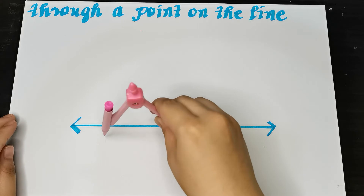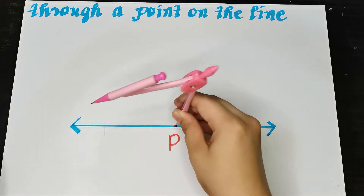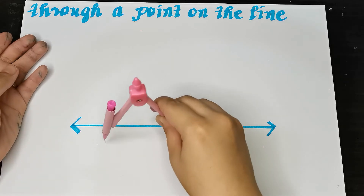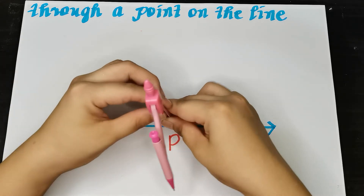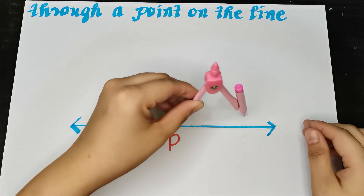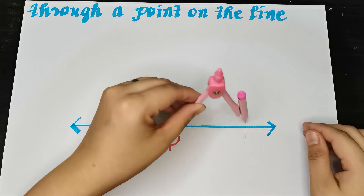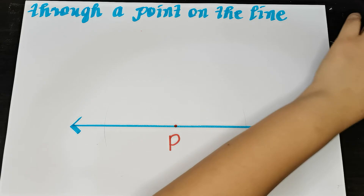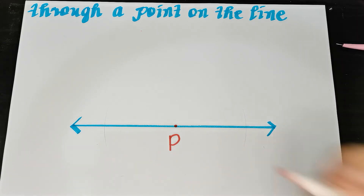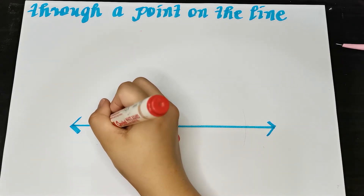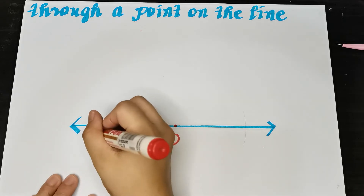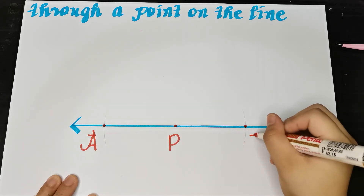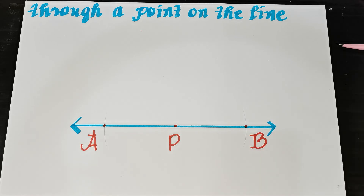So adjust your compass. Draw an arc here, then rotate it to the other side and draw an arc — do not change the opening of your compass. Then let me name this point here. I now have a point here — let's say this is my point A and this is my point B.